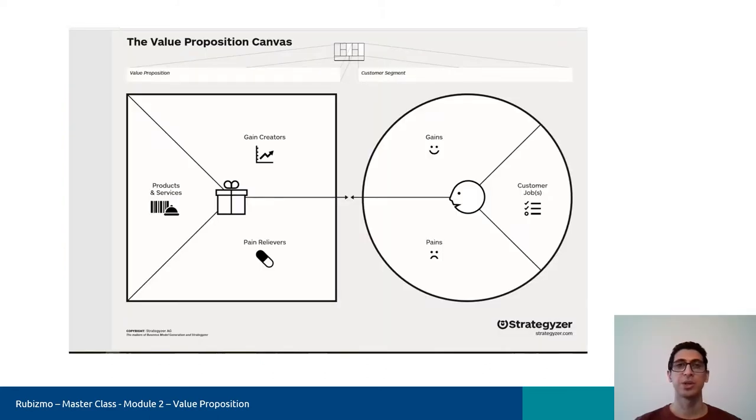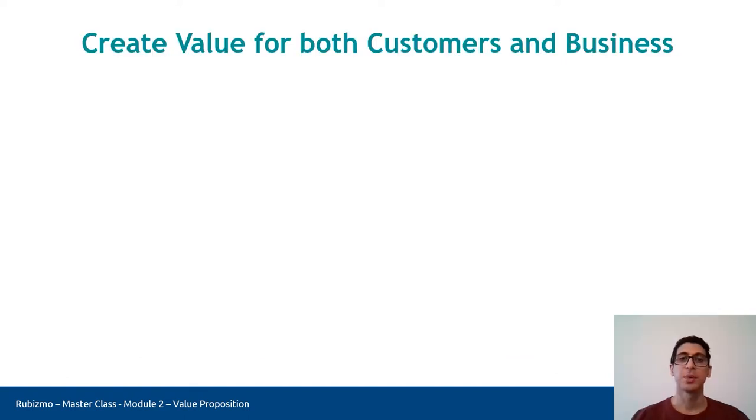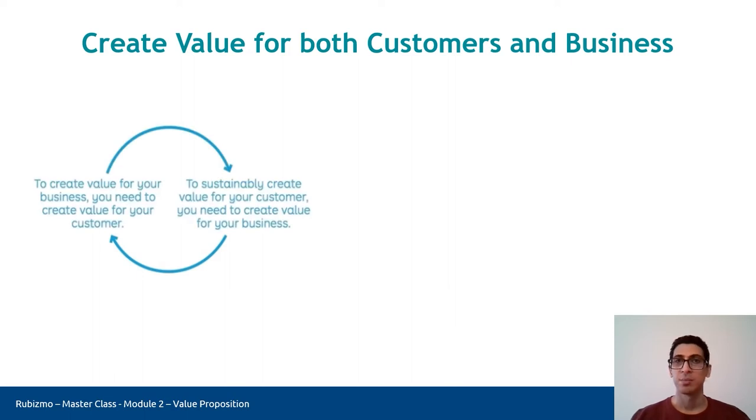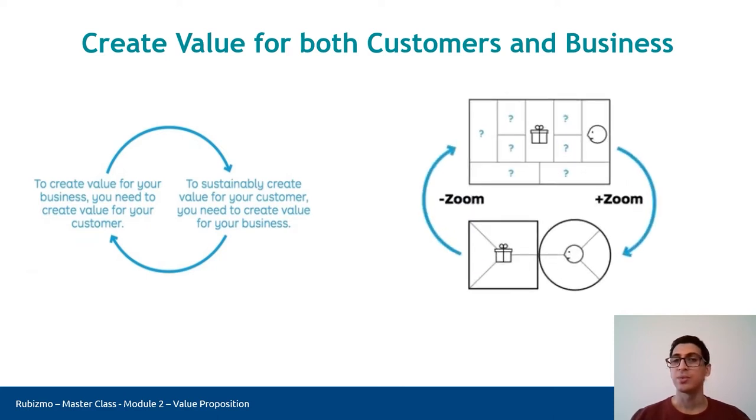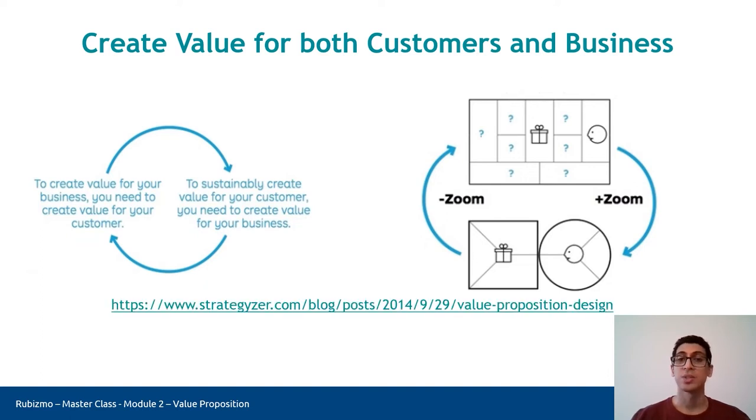Today we will work on this picture. And as you saw, the left side is called value map and the right side is called customer profile. But before going in detail, let me add that a business that generates value less than its costs will disappear, even if the company creates the best value proposition. So getting the value proposition and business model right needs a back-and-forth process to nail it. As you can see on your screen, we have to zoom into the detailed picture to see if the customer value proposition creates value for customers, or zoom out to see if we can profitably create, deliver, and capture value around this customer value proposition.